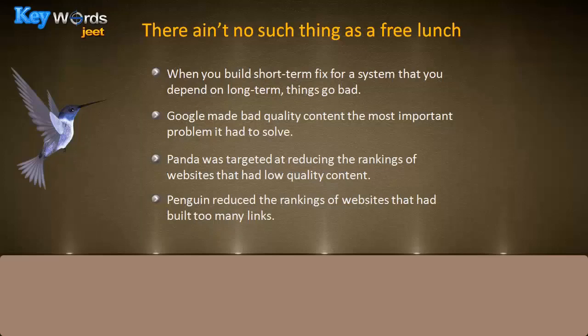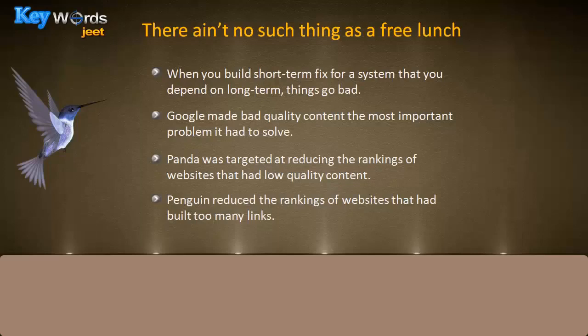That's why Google made bad-quality content the most important problem it had to solve — even bigger than getting search right. Google CEO Eric once said 'the internet is like a cesspool,' and Google's priority was to clean it. Google did that through updates. The first was Panda, which targeted and reduced the rankings of websites that had low-quality content — not producing quality articles, images, or whatever they were producing — and were in search results only because of keyword targeting.